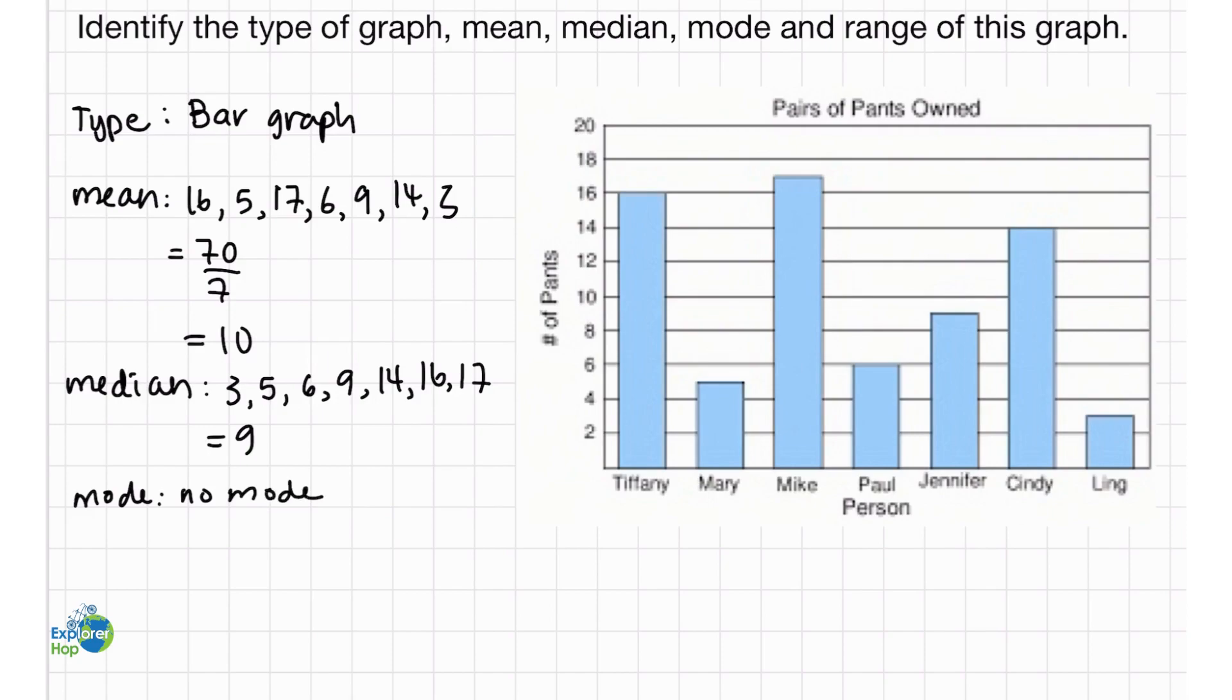And last but not least, we need to find the range. Remember, the range is when we subtract the smallest number from the largest number. Our largest number is 17, and we subtract 3 from it. This will give us 14. That's our range.